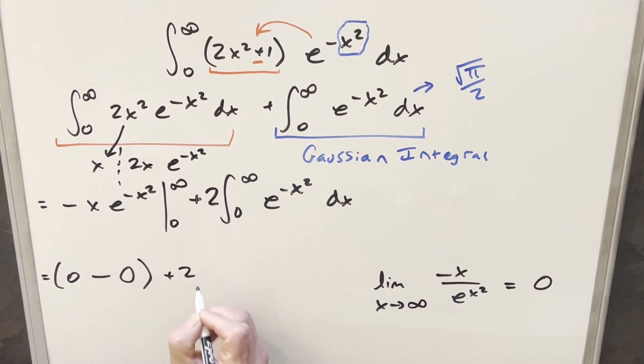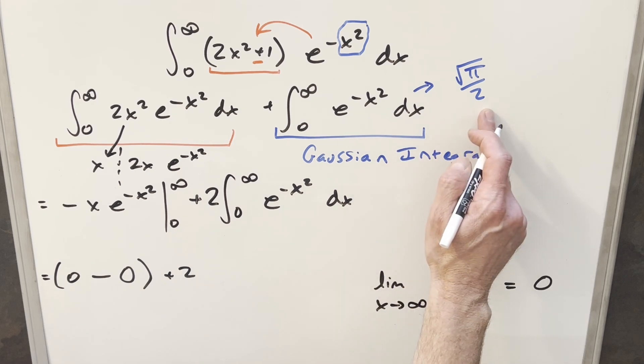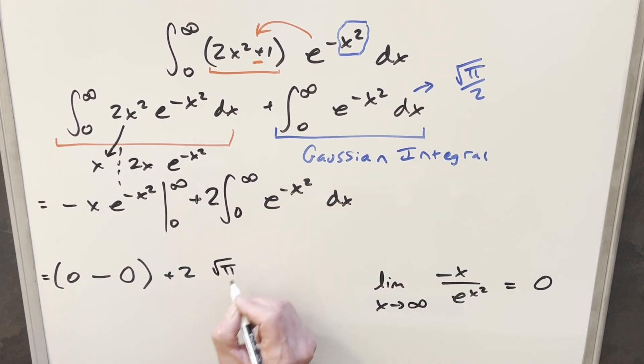Then here we're going to have our plus 2. But now again, this here is just the Gaussian integral, and we just memorized this value of square root of pi over 2. So we'll just put that in right here, square root of pi over 2. Multiply it out. This part goes away. Multiplying 2 times square root of pi over 2 gives me my final solution of just square root of pi.